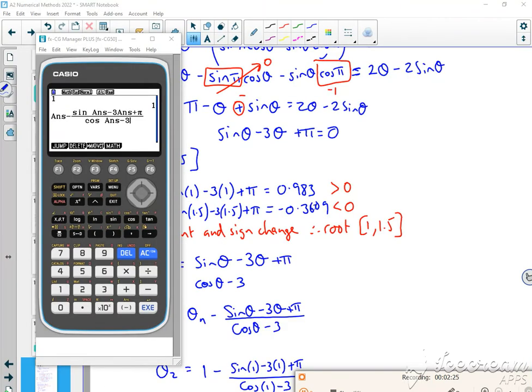Put 1 equals in for my θ₁, and I've got ans minus sine of ans minus 3 ans plus π over cos of ans minus 3, and that gives me 1.39967.